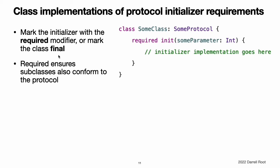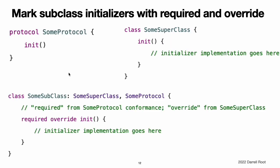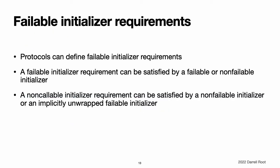If a subclass overrides a designated initializer from a superclass and also implements a matching initializer requirement from a protocol, mark the initializer implementation with both the required and override modifiers. Failable initializer requirements. Protocols can define failable initializer requirements for conforming types. A failable initializer requirement can be satisfied by a failable or non-failable initializer on a conforming type. A non-failable initializer requirement can be satisfied by a non-failable initializer or an implicitly unwrapped failable initializer.